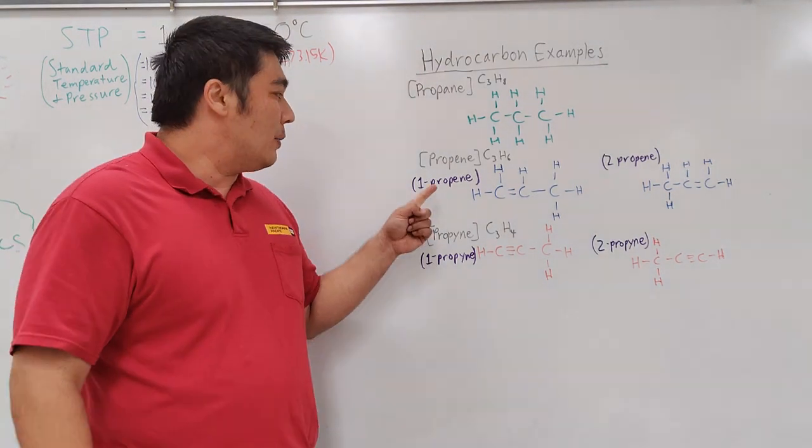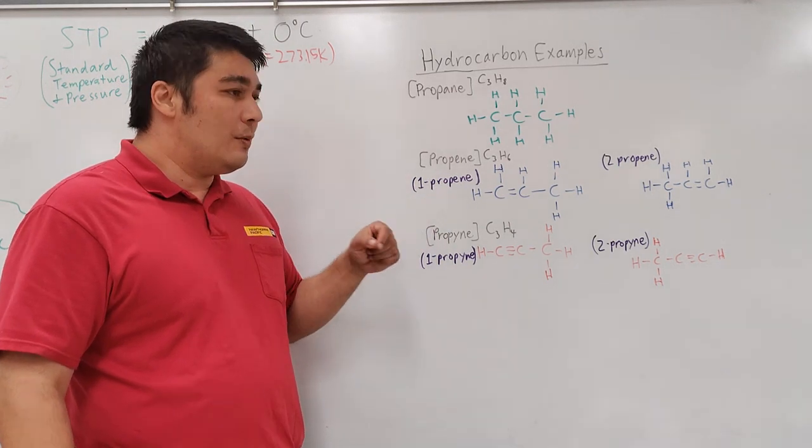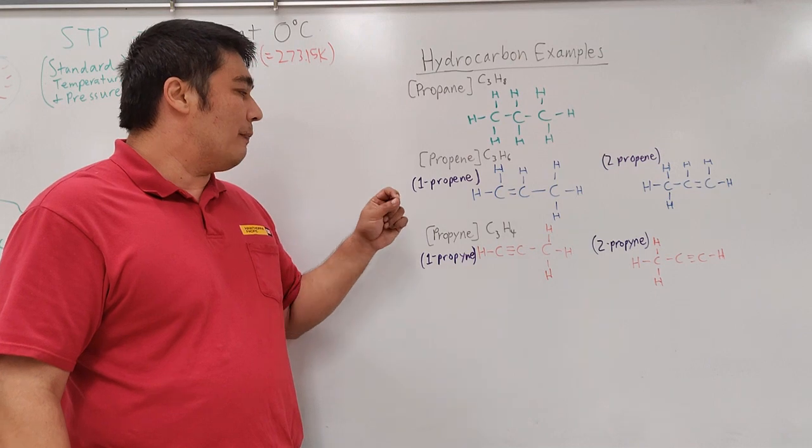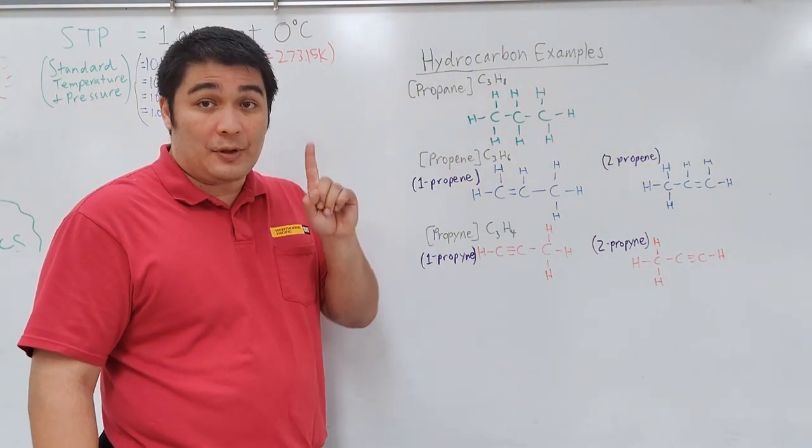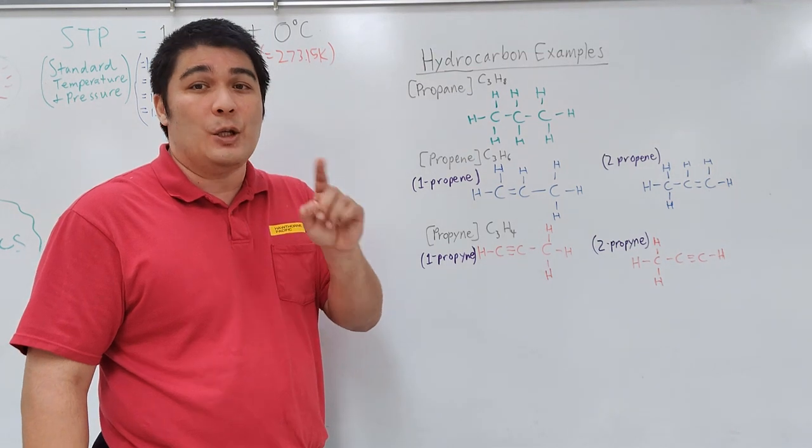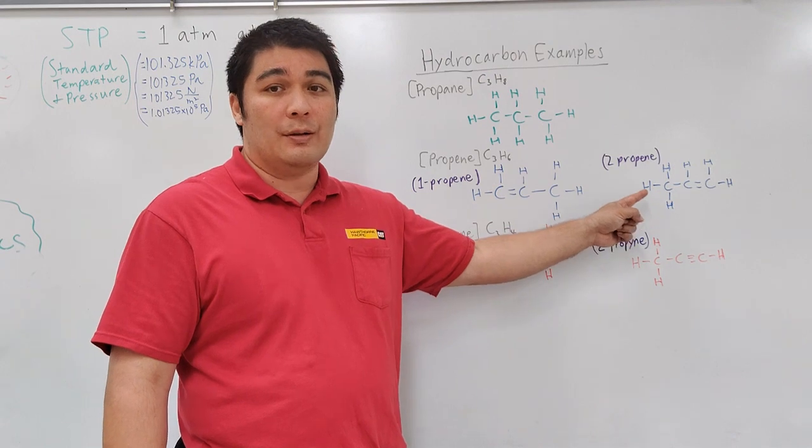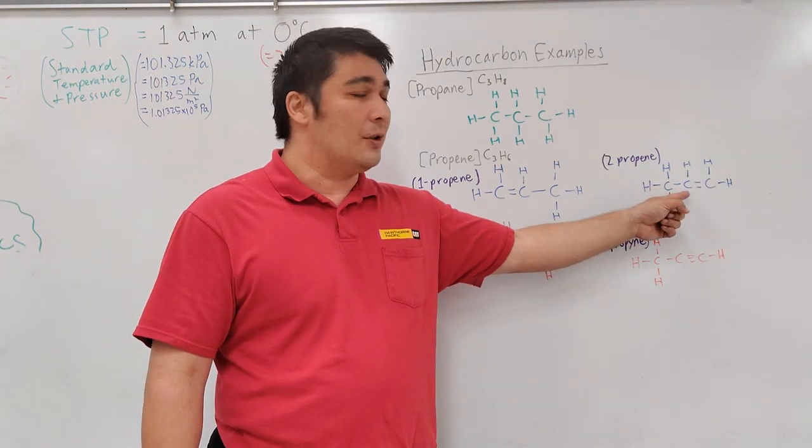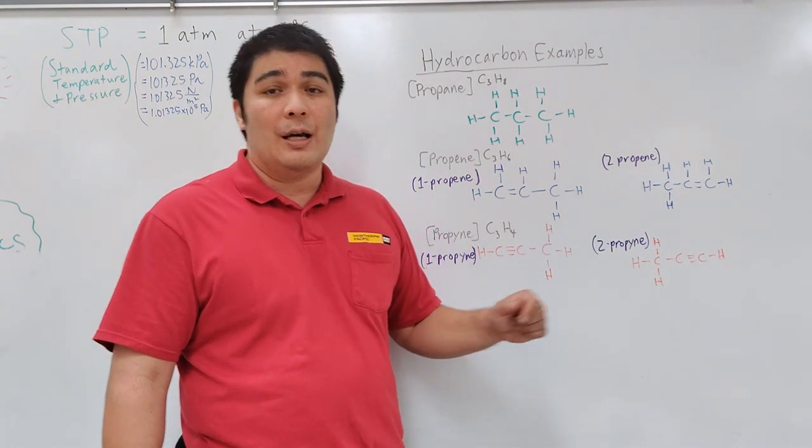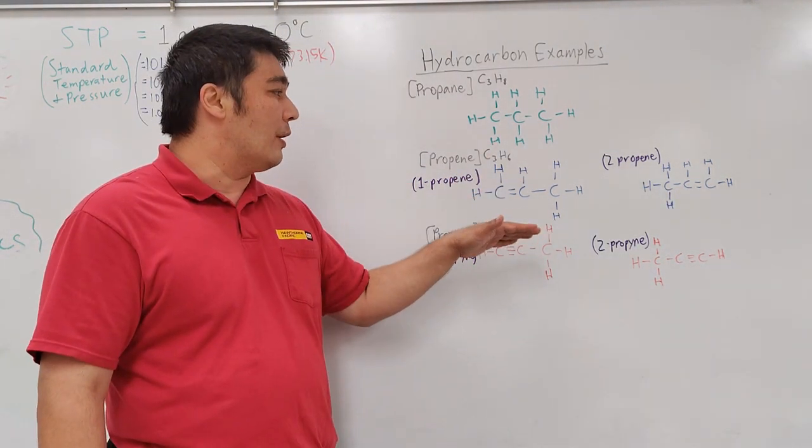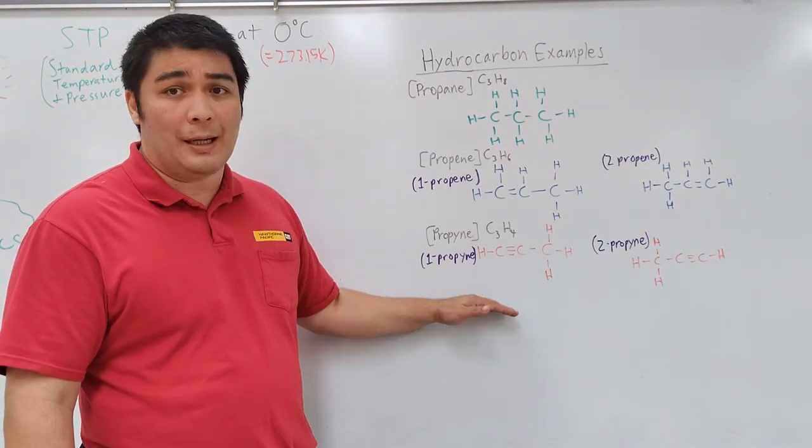So what we call them is we put a one in front, we call it 1-propene and the reason why we say that is because that tells you that after the first carbon atom, you put the double bond. Just like in this one where it says 2-propene, you put the double bond after the second carbon atom in between the second and the third. So that's how the rule works for these isomers of propene and of course the same thing with propyne.